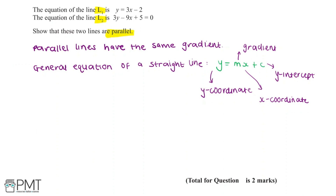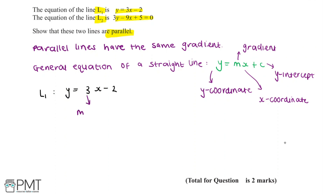Now let's take a look at the lines we've been given. L1 is y equals 3x minus 2, and the equation of L2 is 3y minus 9x plus 5 equals 0. L1 has already been given to us in the form y equals mx plus c: y equals 3x minus 2. We can easily identify that m equals 3, which is the gradient of the line, and c equals minus 2, which is the y-intercept.